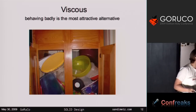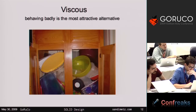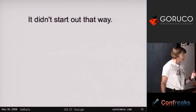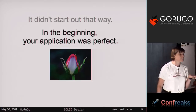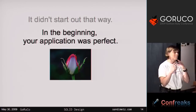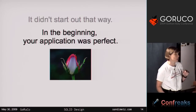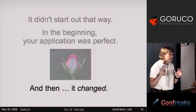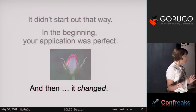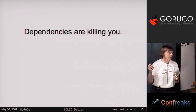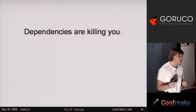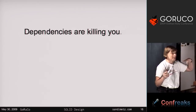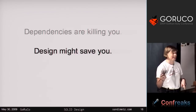So how is it that your app is rigid and fragile and immobile and viscous? It didn't start out that way. In the beginning, your application was perfect — it was like a beautiful flower, a joy to work on. And then it changed. That's all that happened. When you make changes that introduce unexpected dependencies in your app, they will kill you. I'm here today to talk about how design can save you.